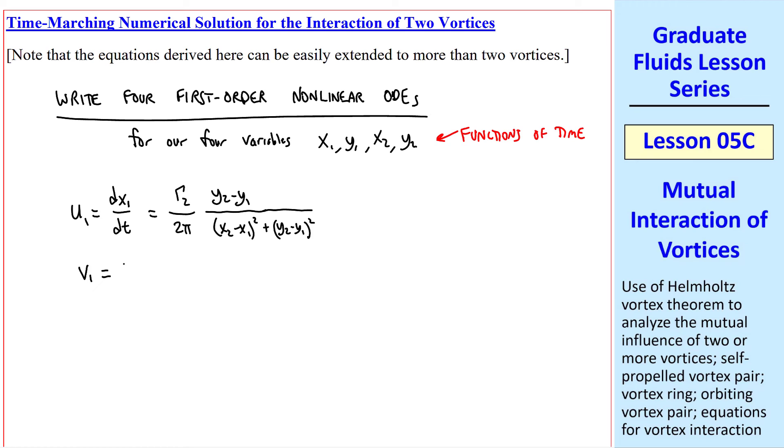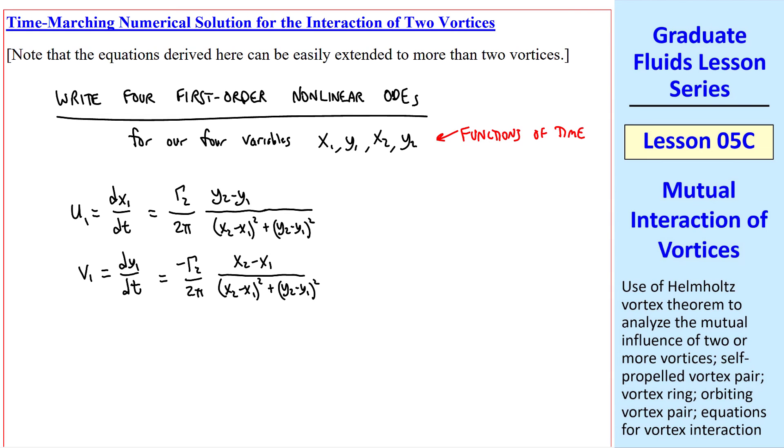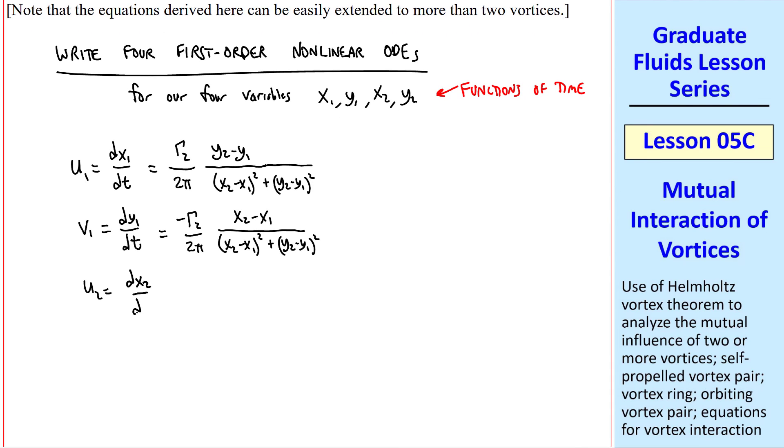Similarly, v_1 is dy_1/dt, which is negative gamma_2 over 2 pi, x_2 minus x_1, over r squared. u_2 is defined as dx_2/dt. And again, from our equations above, it's gamma_1 over 2 pi, times y_1 minus y_2, over r squared.